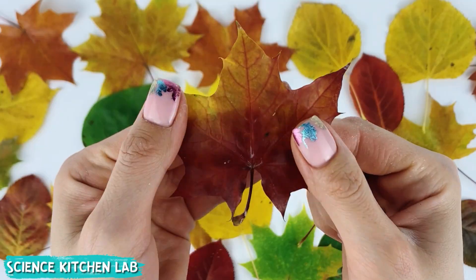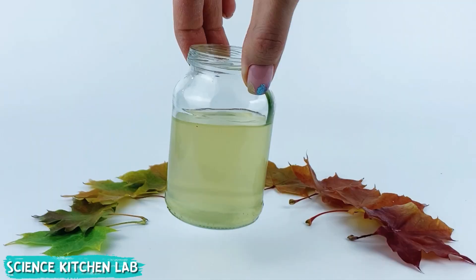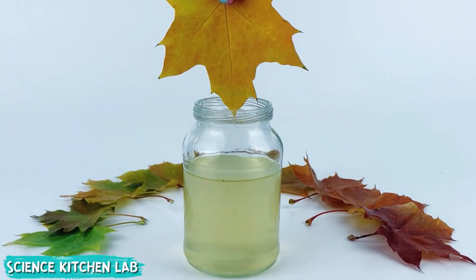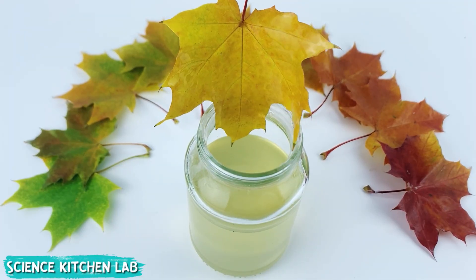Let's preserve autumn leaves using wax. It's simple and effective. We melt paraffin from candles in a double boiler. You can also use a microwave. We prepare fresh autumn leaves by washing and drying them.